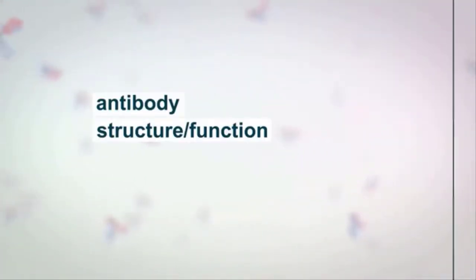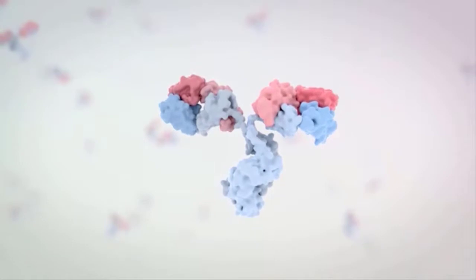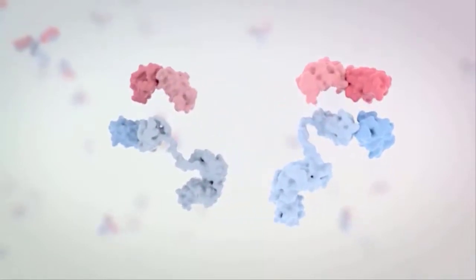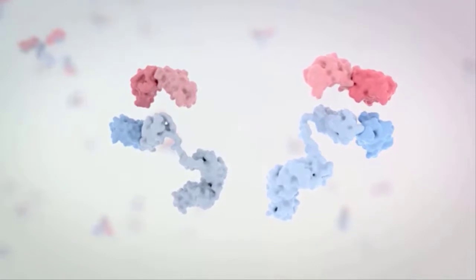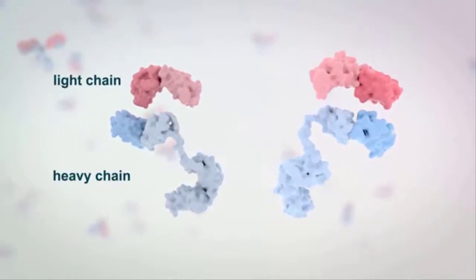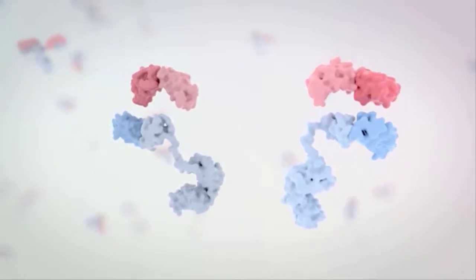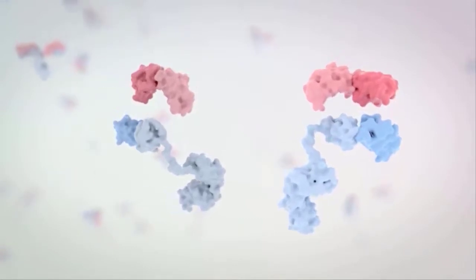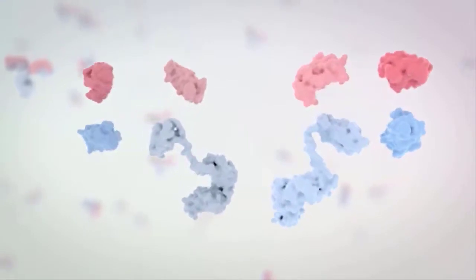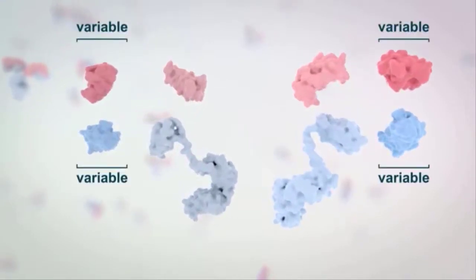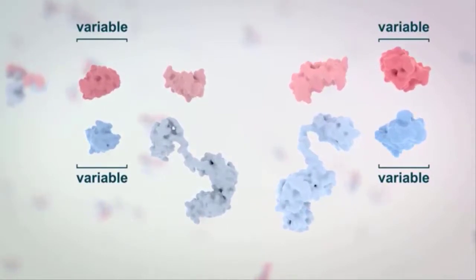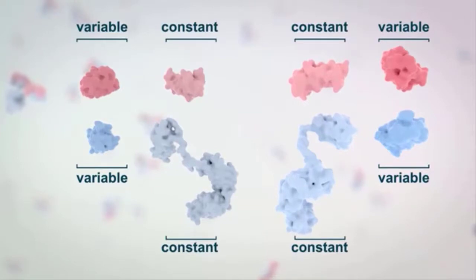Let us now watch an animated video on therapeutic antibodies. Antibodies are made of several different peptide chains bound together in a Y shape - two identical immunoglobulin heavy chains and two identical immunoglobulin light chains. The structural features can be split into two parts: the variable region, which recognizes a target, and the constant region, which determines the antibody's biological function.